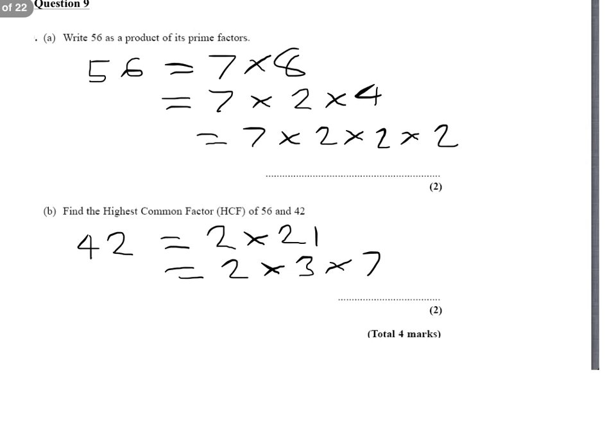Now, the reason I've done that is that the highest common factor of 56 and 42 can be found by expressing both as products of prime factors, and then circling numbers that have come up in both.